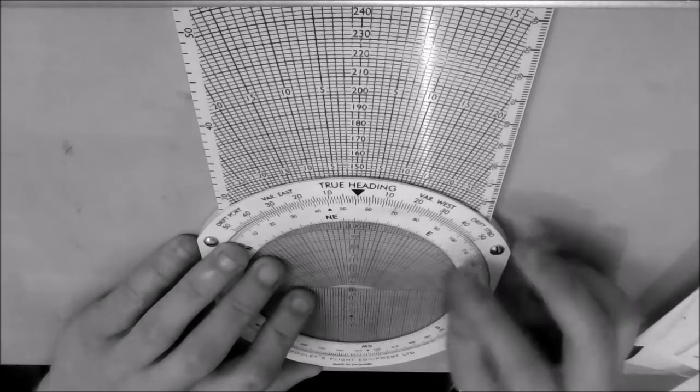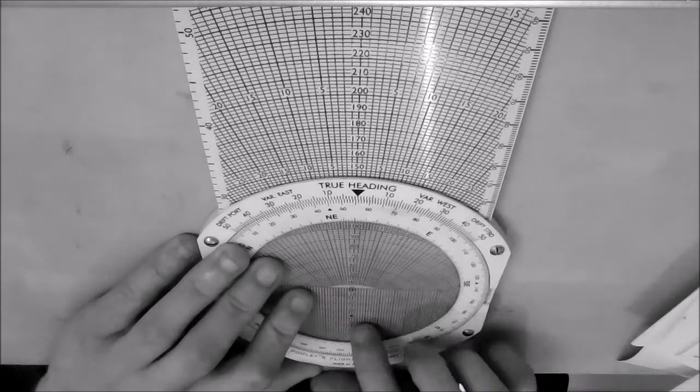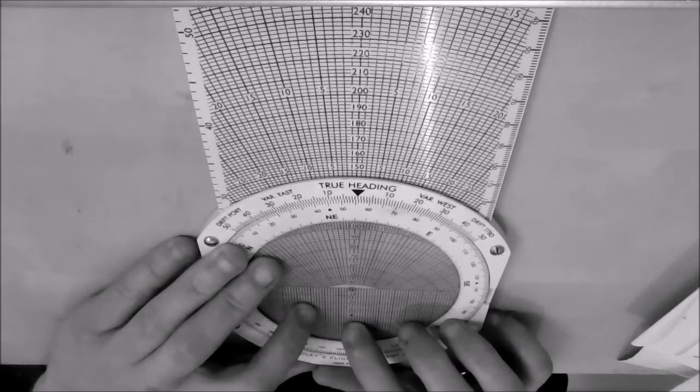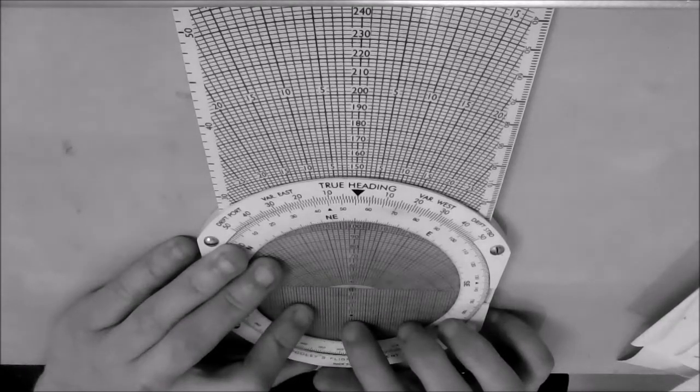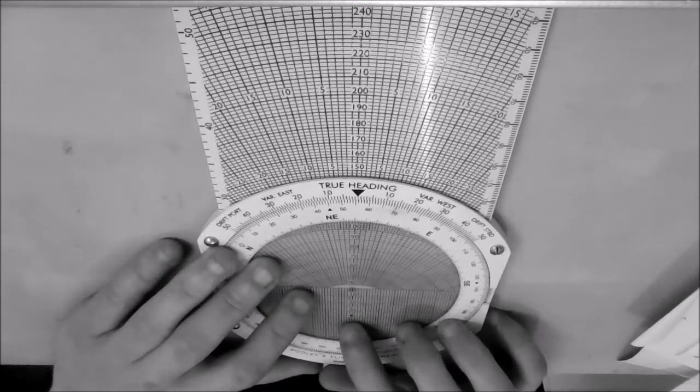And then simply read off the heading at the top, which I can see here is 057. And the speed there, which is 38 knots. So our wind velocity is 057 at 38 knots. Simple as that.